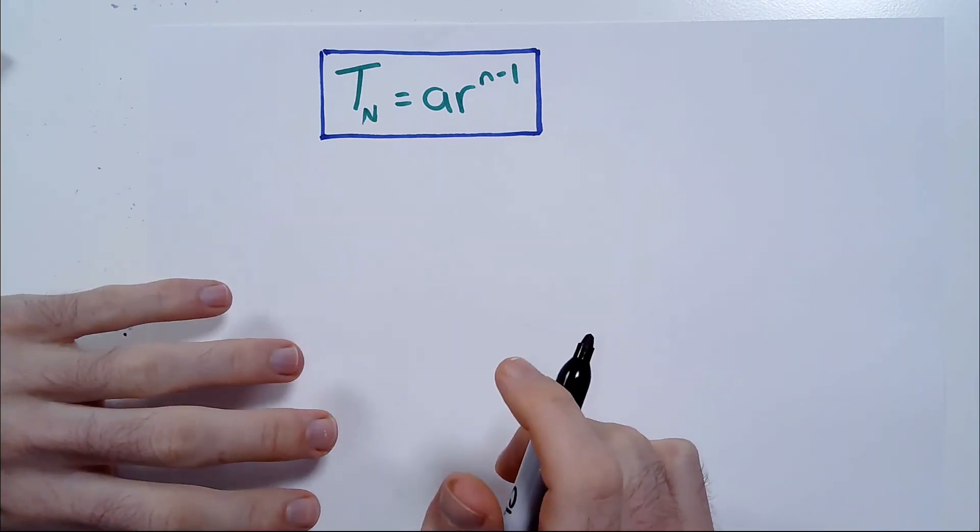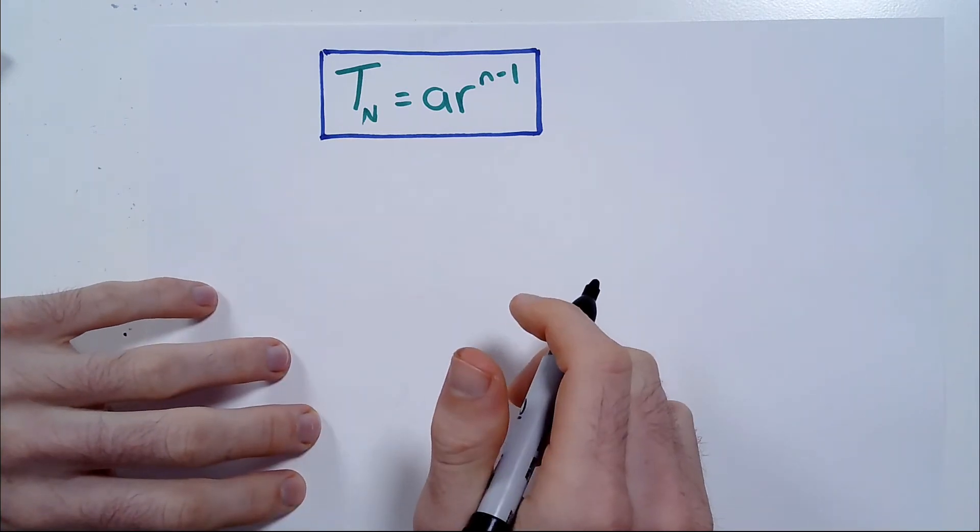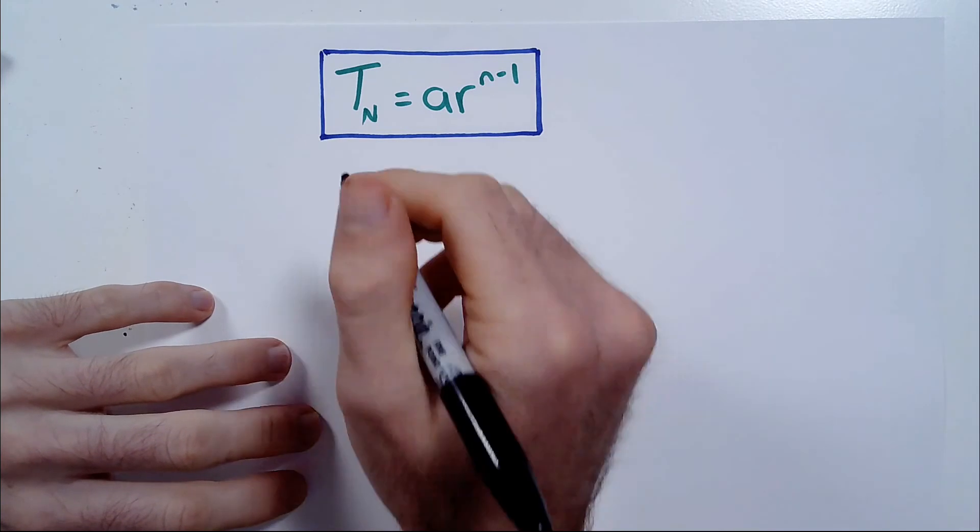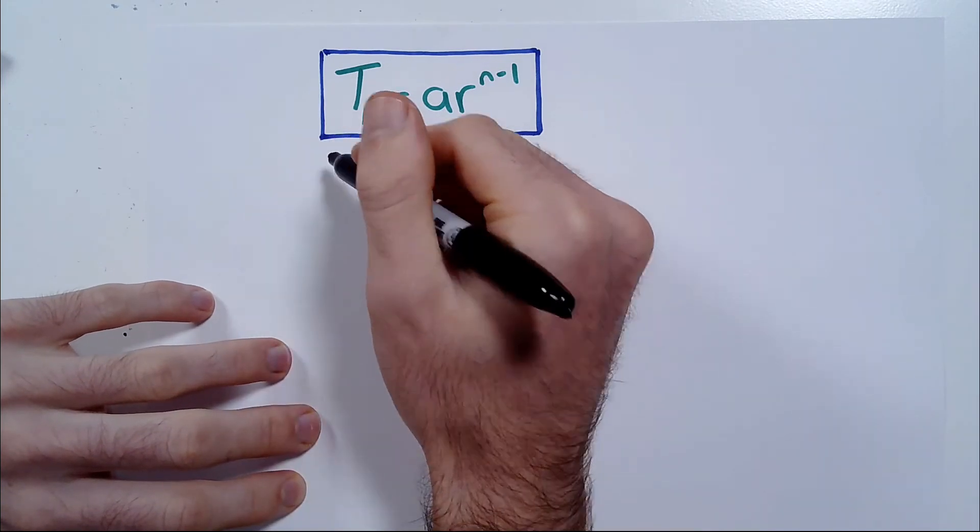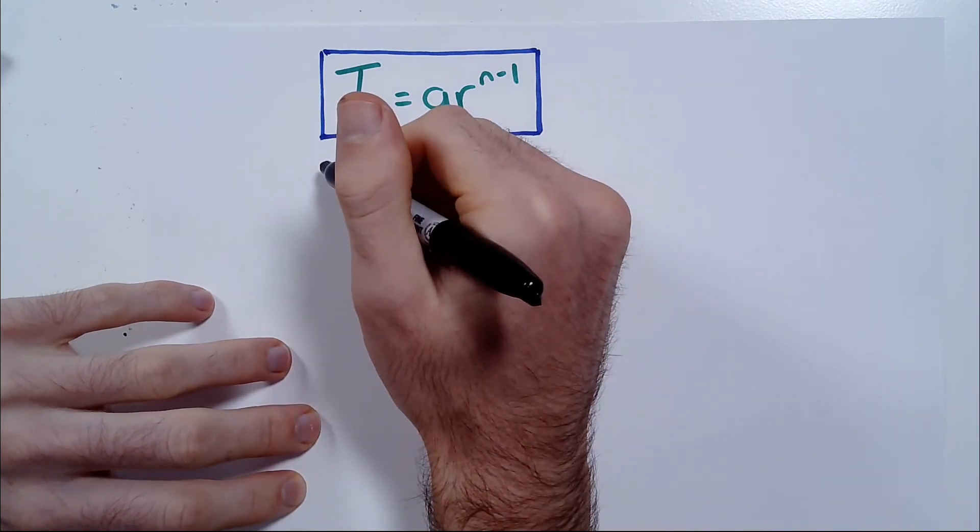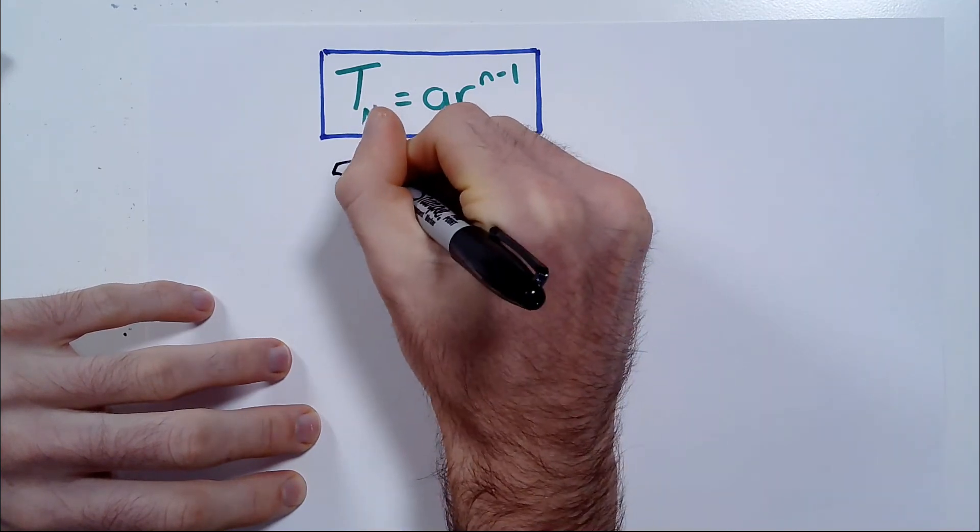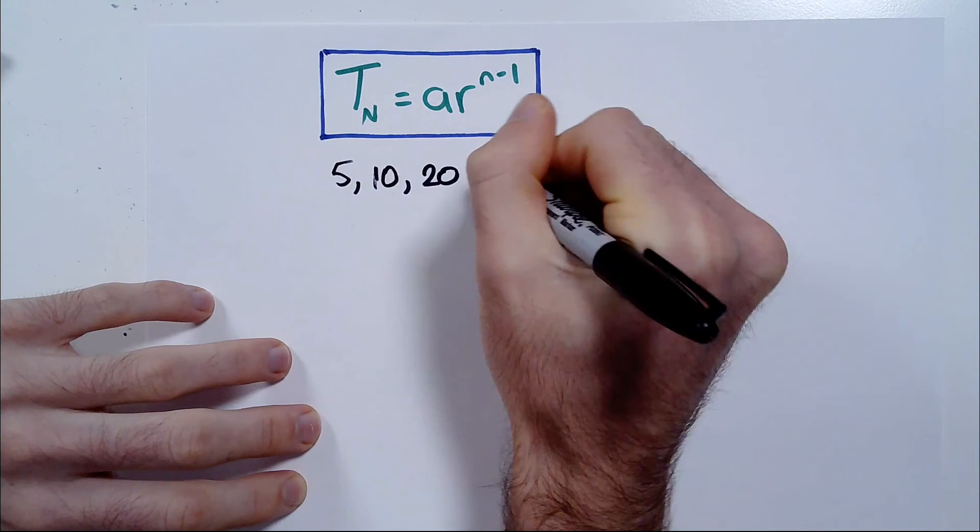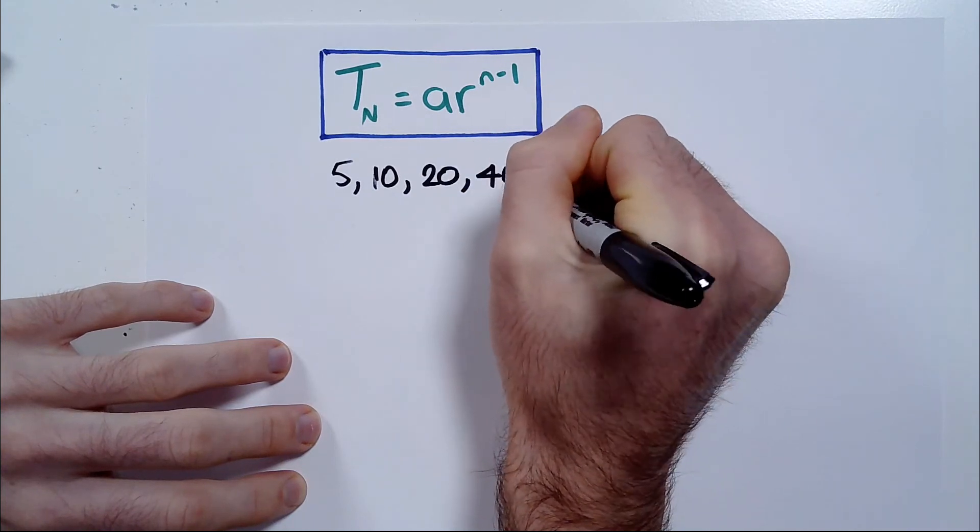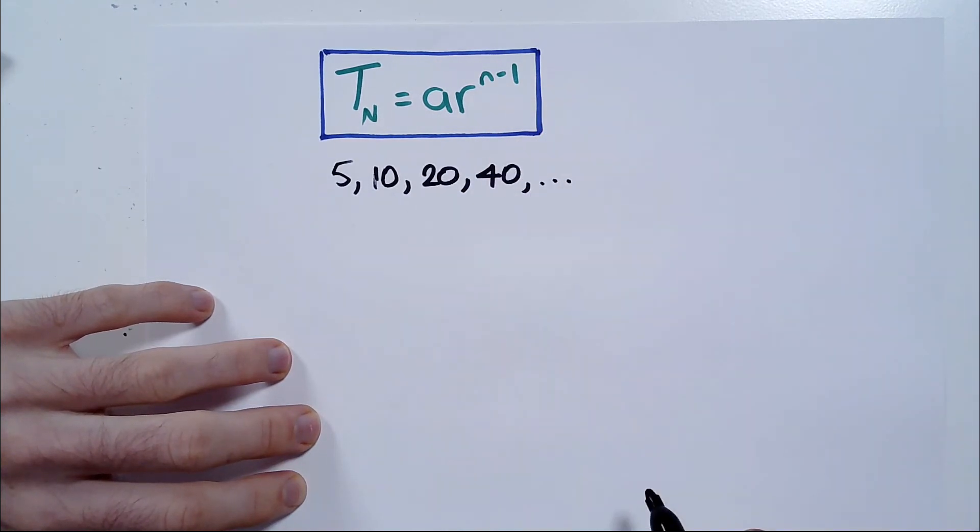So how do you find any term if you have a GP? Well, let's first of all consider a pattern that produces a geometric progression. Let's say I have the numbers 5 followed by 10 followed by 20 followed by 40 and so on. Now what kind of pattern do we have here? How do we know it's a GP?